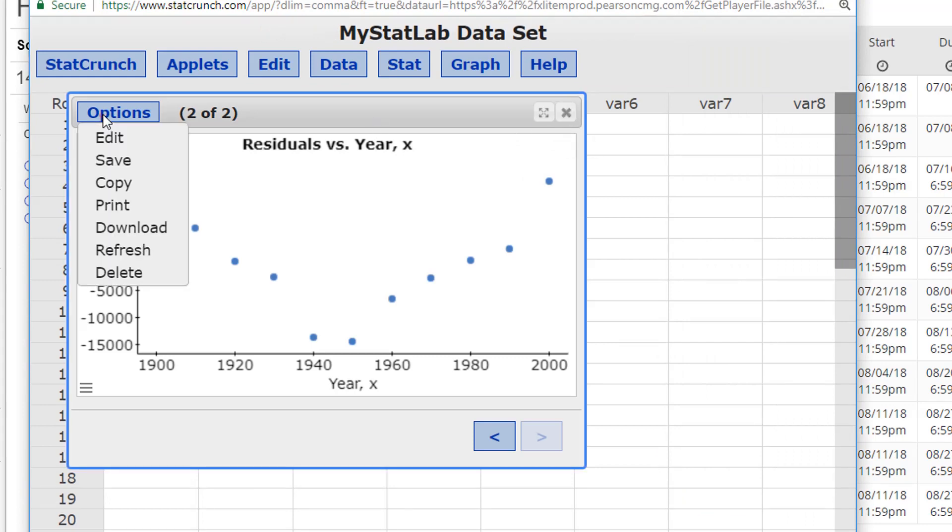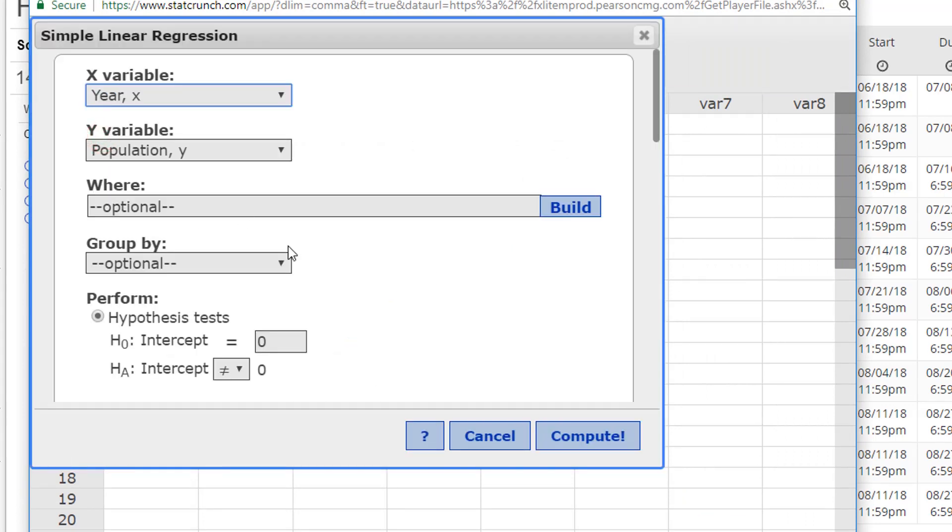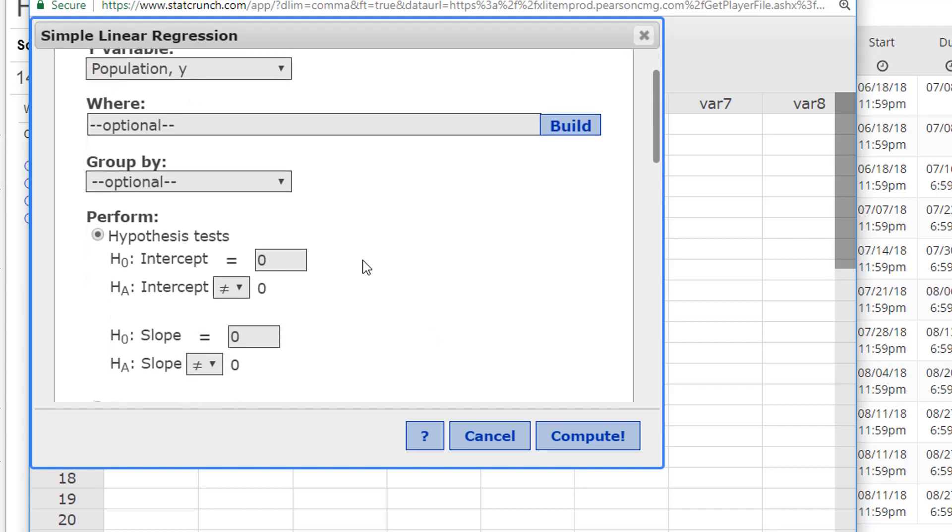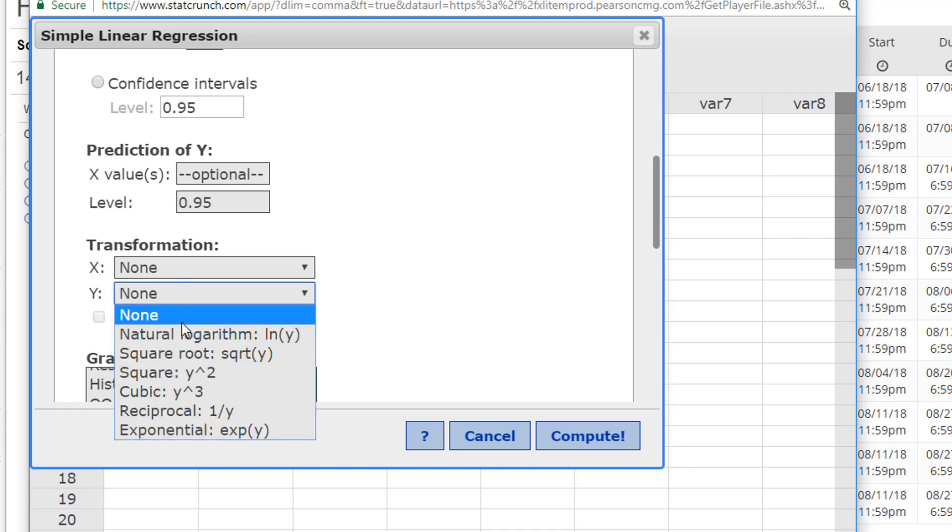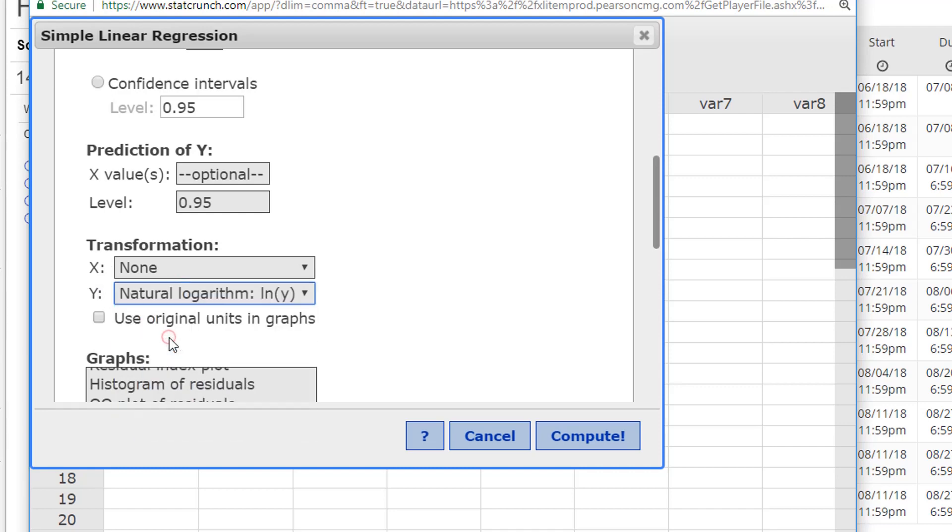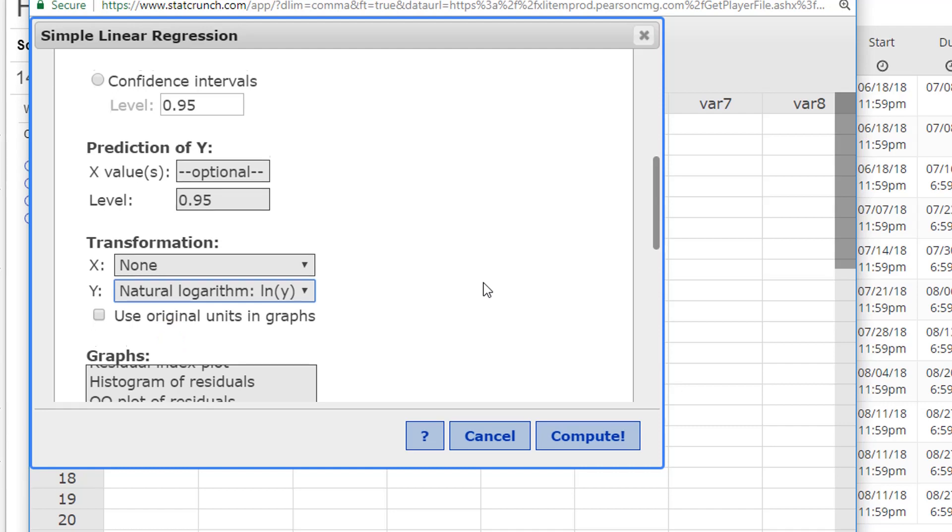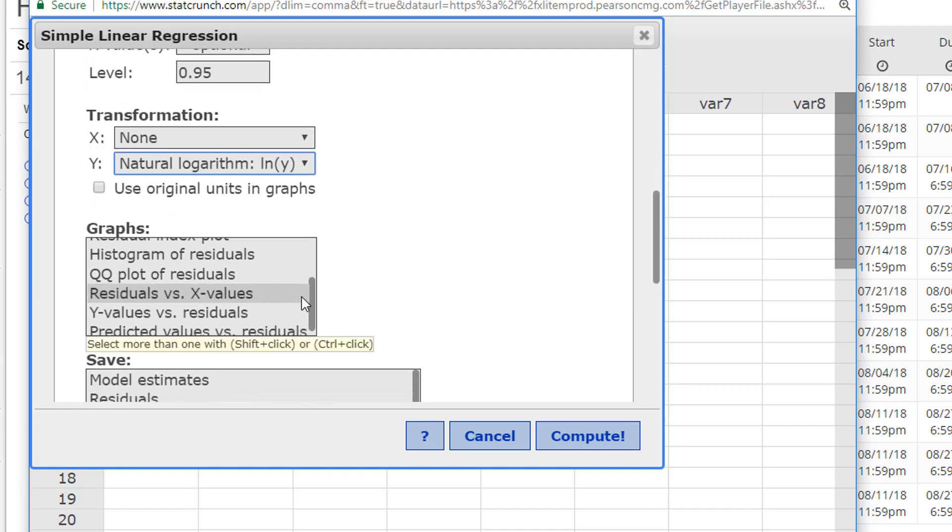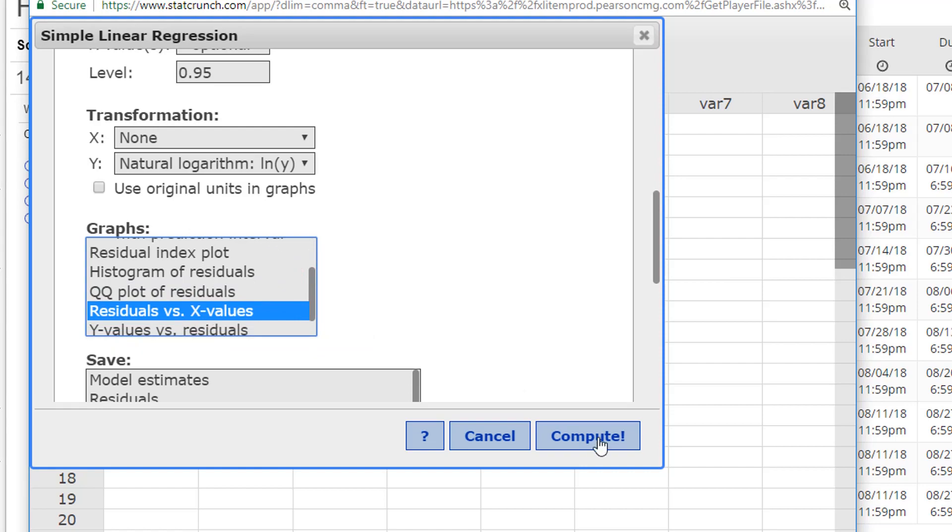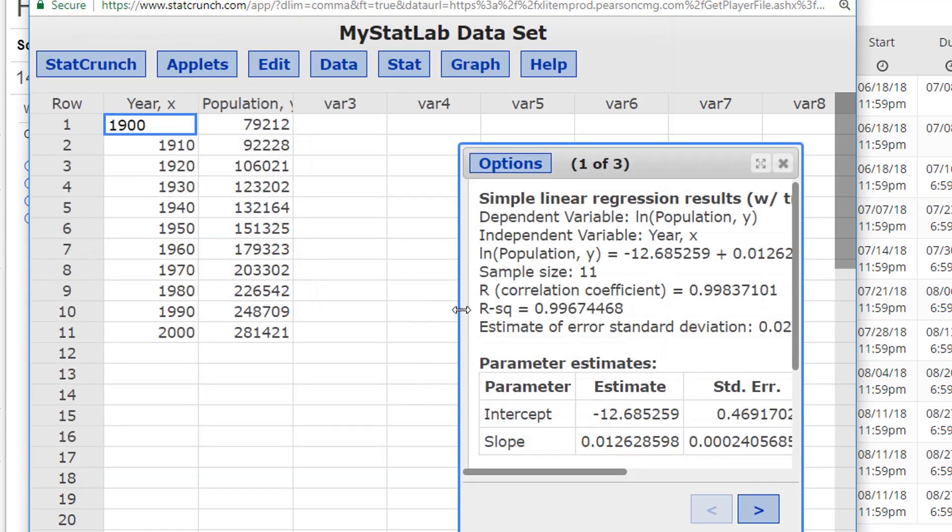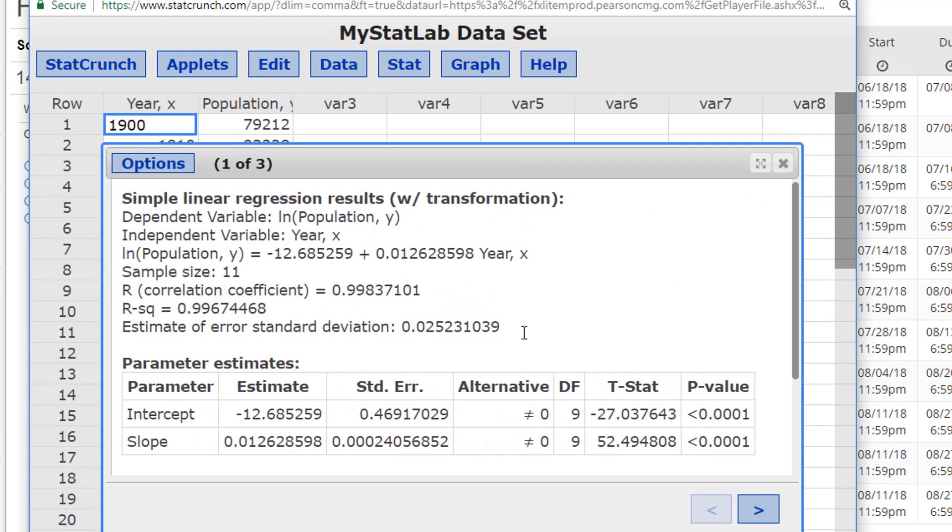Let's see if there's transformation. Look at that. Let's do a transformation on the Y values, a natural logarithm of my Y values. Now I'm going to do that, and I'm going to create both of my plots, the fitted line plot and the residuals versus X values. Let's compute. And let's look at our output.